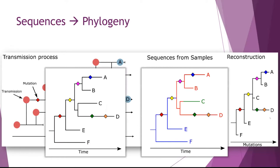But we can actually do even more complicated things. Because we know when the samples were taken, we can make a time-resolved tree — putting samples on the date when they were collected and stretching or shrinking branches to reflect when we last think two sequences were related. We can then make estimates about when a hypothetical ancestor might have existed, informing us about how things might have changed through time, even if we don't have a sample from exactly that time point.